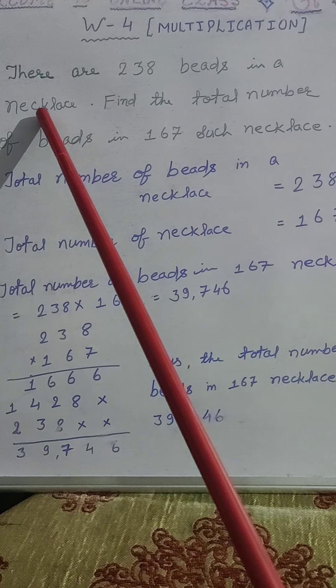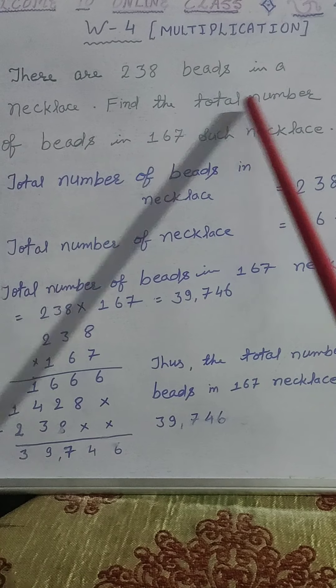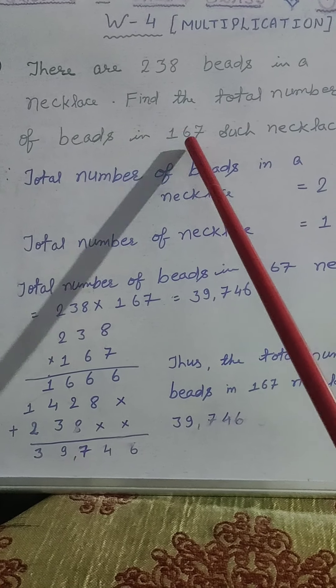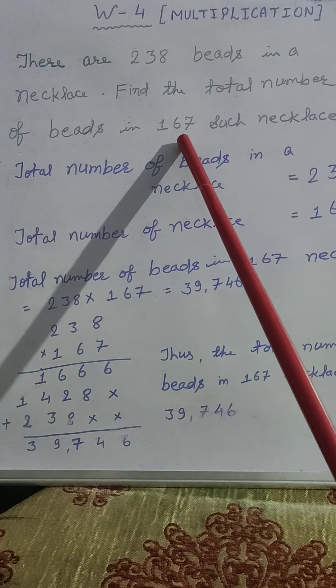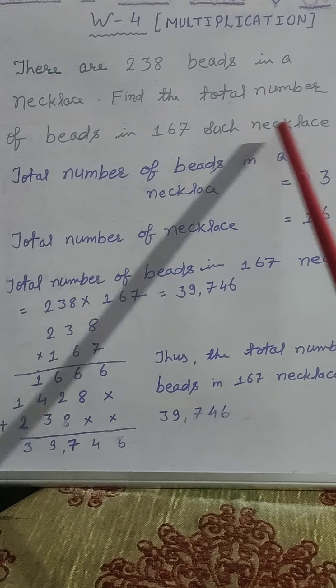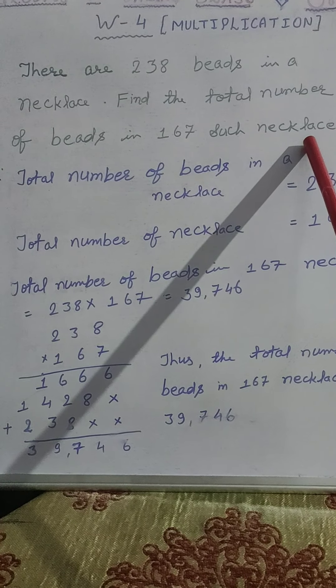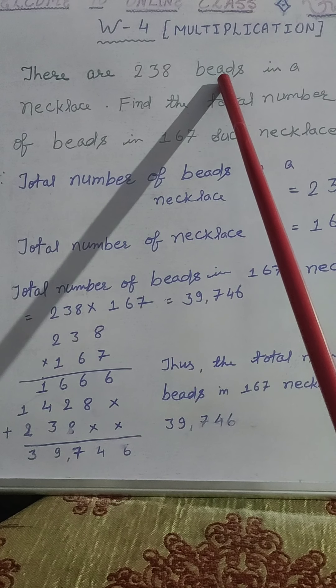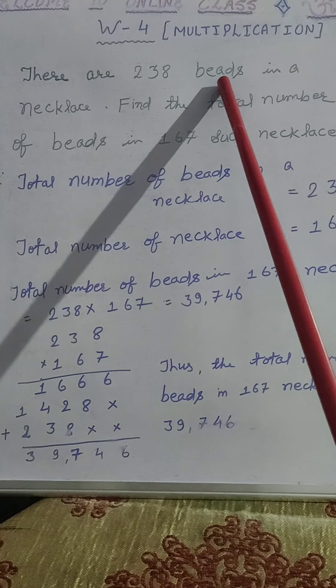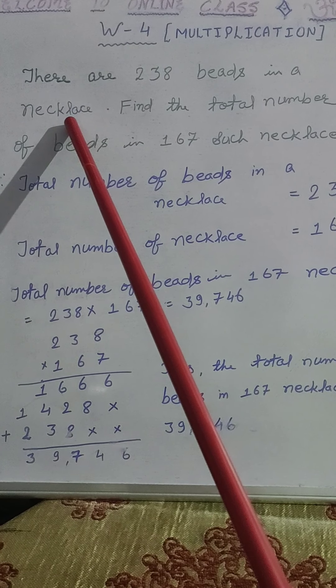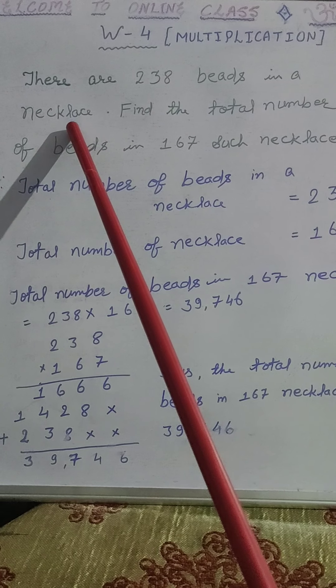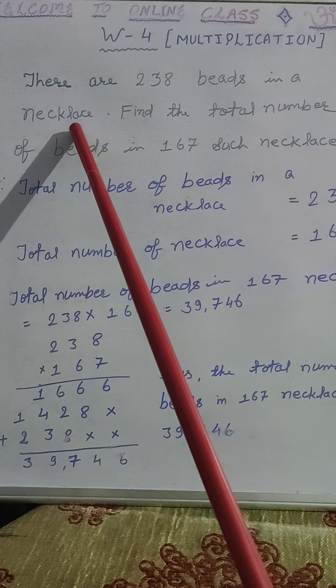We have to find the total number of beads in 167 such necklaces. Beads means small pieces of stone or glass which is used to make necklace. And necklace is a kind of ornament which is worn round the neck.